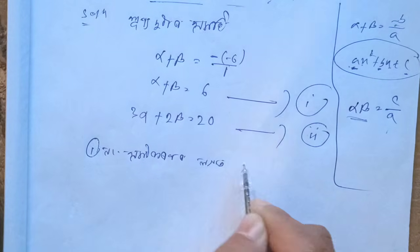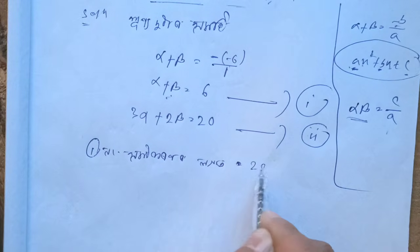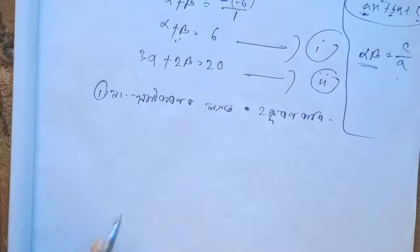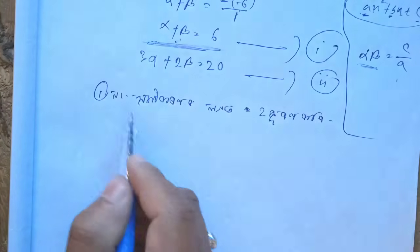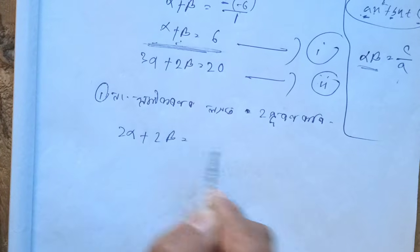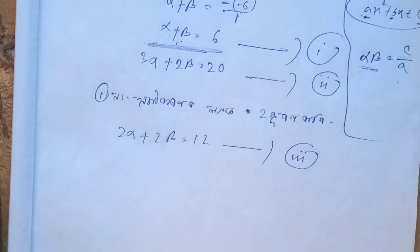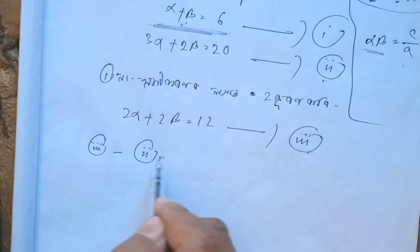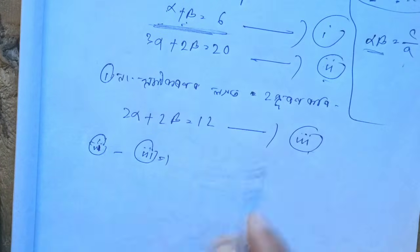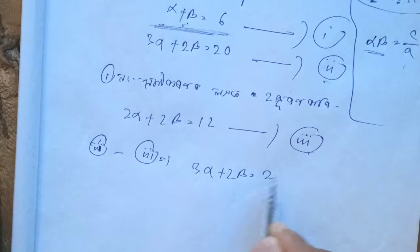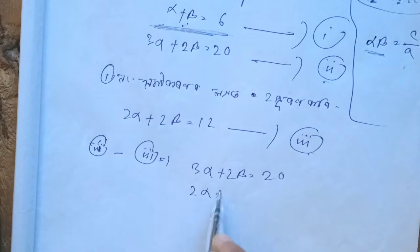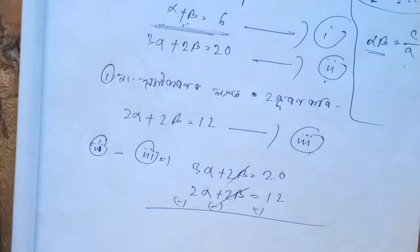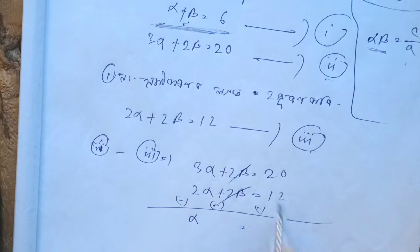Setting up: 3 alpha plus 2 beta equals 20, and 2 alpha plus 2 beta equals 12 (from multiplying alpha plus beta equals 6 by 2). Subtracting: 2 beta and 2 beta cancel, leaving alpha equals 8, so alpha is 8.